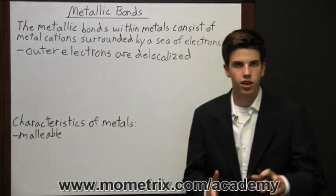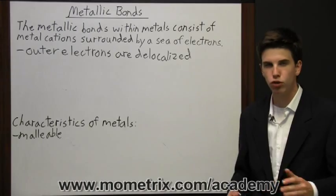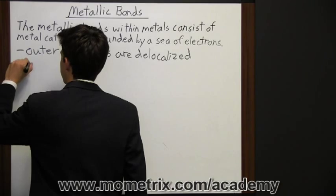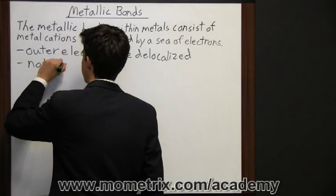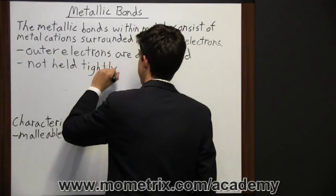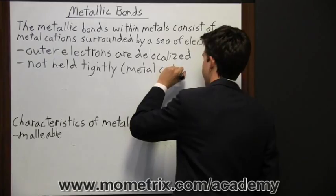Now, the metal cations are not held tightly in one place. So they can move relative to each other when they are struck. So I'm going to write here not held tightly. And then in parentheses, I'm going to write metal cations, just to make sure everyone's clear on what we're talking about here.